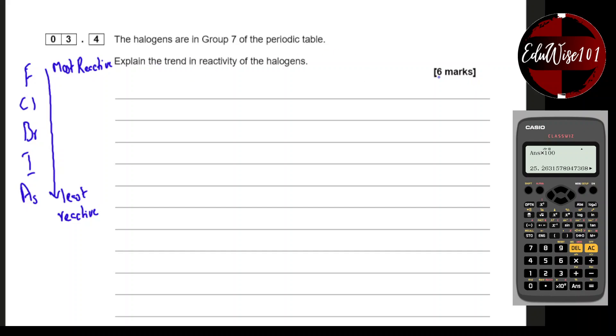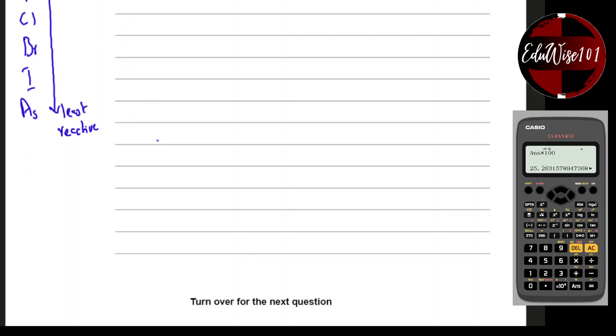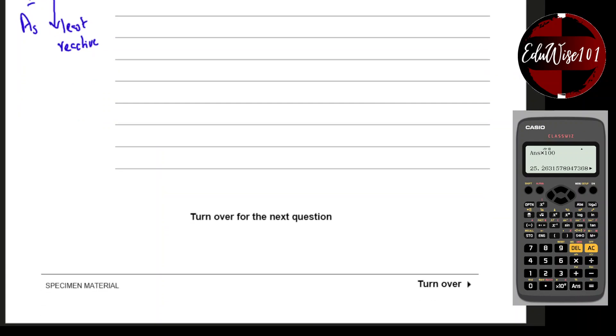They're asking you to explain the trend. As you go down the group, the reactivity decreases. The reason for that is to do with the size of the atom, the number of shells, which relates to electron shielding and how the electrons are actually attracted. Group 7 elements all need one electron in the outer shell. Let me show you a diagram, and then we can write the answer.